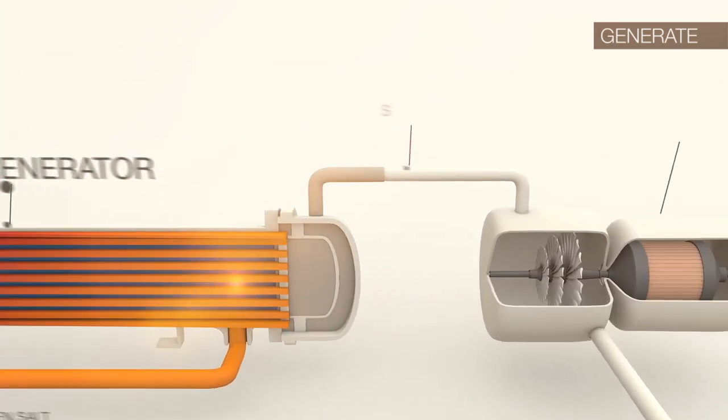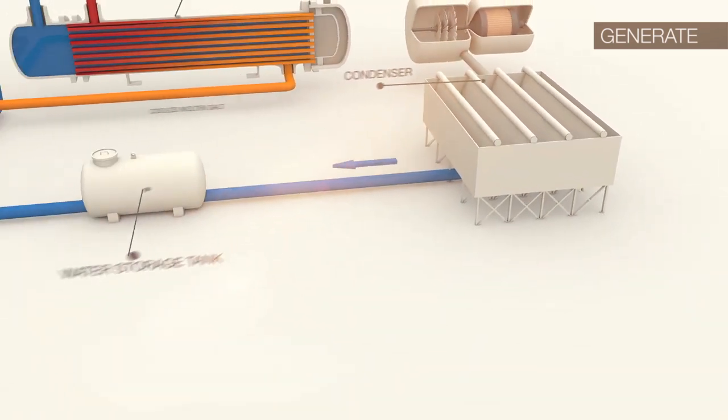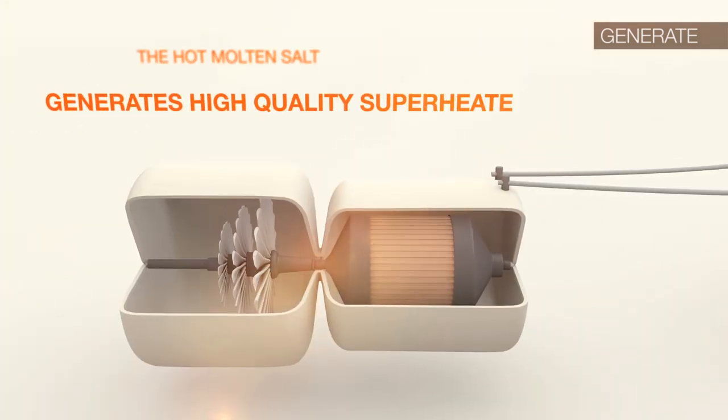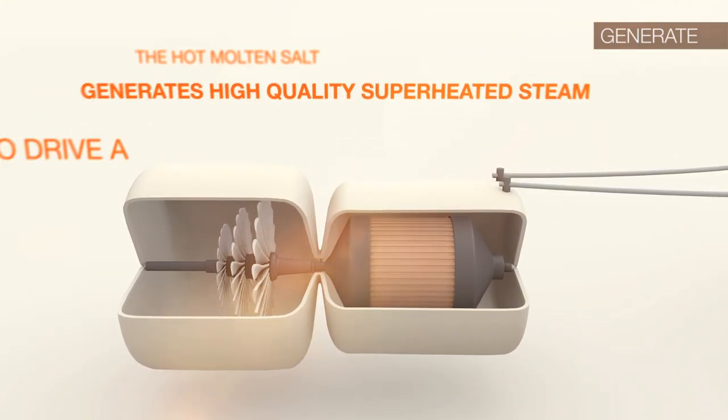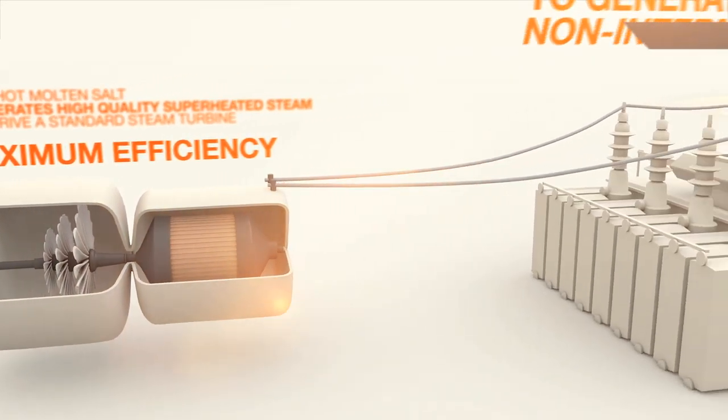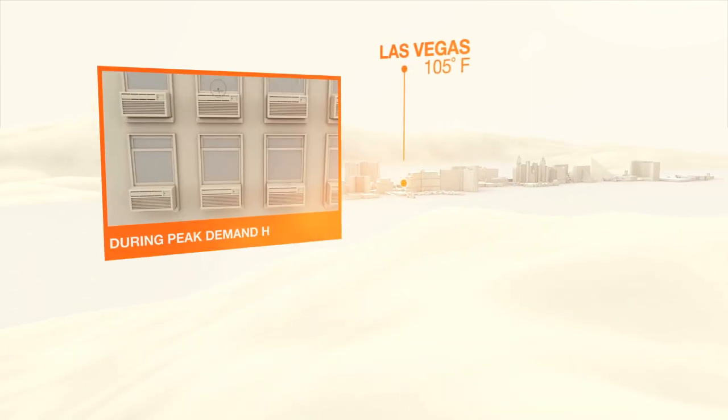After the steam is used to drive the steam turbine, it is condensed back to water and returned to the water holding tank where it will flow back into the steam generator when needed. The result is high quality superheated steam to drive a standard steam turbine at maximum efficiency to generate reliable non-intermittent electricity during peak demand hours.